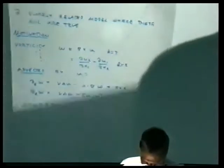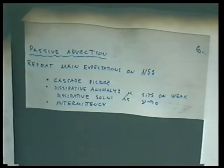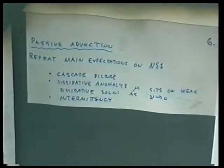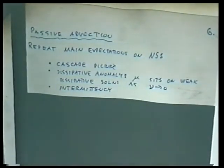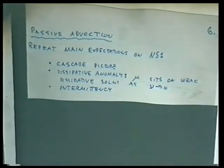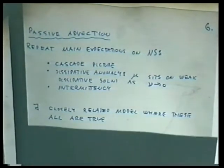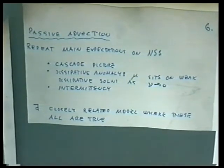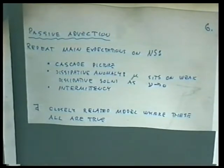To summarize the main expectations for Navier-Stokes: the cascade picture of energy, the dissipative anomaly, the measure sitting on weak dissipative solutions of the Euler equation as Reynolds number goes to infinity, and intermittency. The weak solutions will be non-unique — it's important that they are non-unique — and the whole ensemble of solutions contributes.